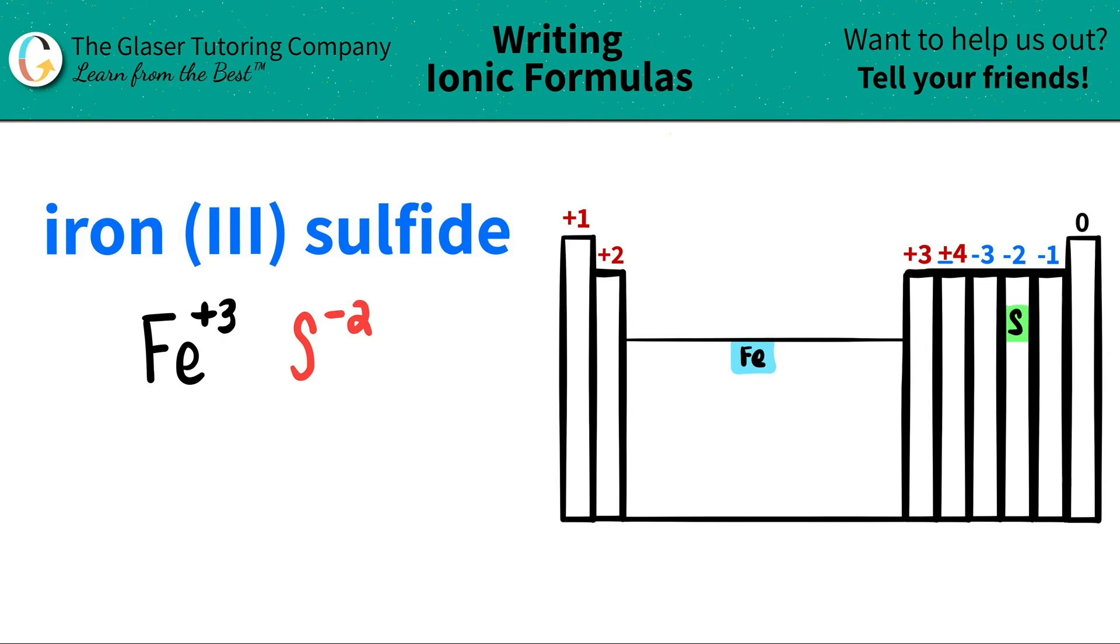Now, since I have both components, all we got to do is do this little trick where we take these charges and crisscross them down to see how many of each element I need. So this plus three crisscrosses down telling me that I need three sulfurs and this negative two crisscrosses down telling me that I need two irons.